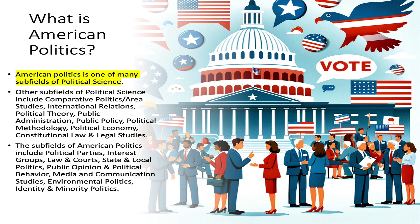American politics itself can be broken down into many subfields. If you open any textbook on American politics, the chapter titles roughly correspond to subfields such as political parties, interest groups, law and courts, state and local politics, public opinion and political behavior, media and communication studies, various policy areas like environmental politics, and identity and minority politics — all subfields of American politics, which is itself a subfield of political science.